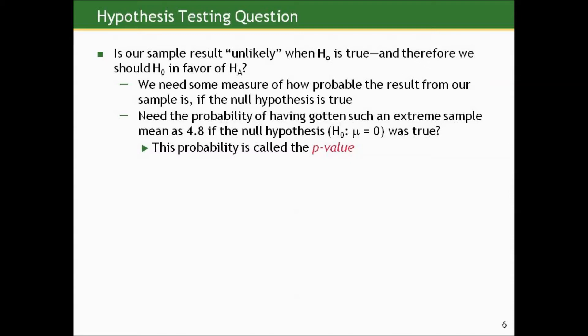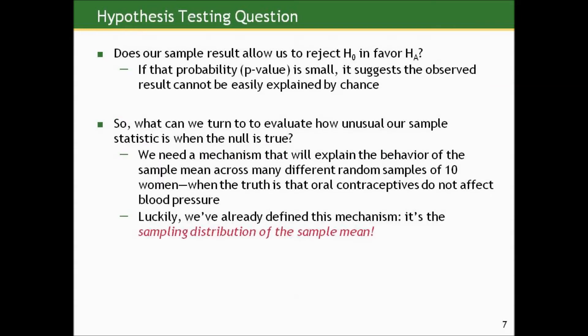We're asking: is our sample result likely or unlikely when the null is true? If it's unlikely, should we reject the null in favor of the alternative? We need to translate this difference between our observed sample mean and the null of zero into some measure of how likely the result from our sample is. How likely is it to get a sample mean of 4.8 from a random sample of size 10 if the null hypothesis of true mean being zero is true? This resulting probability is called the p-value.